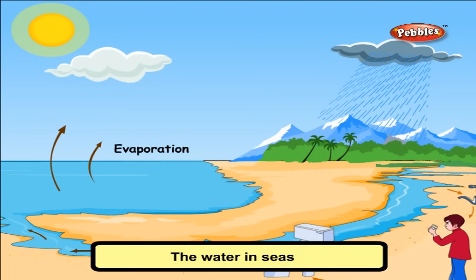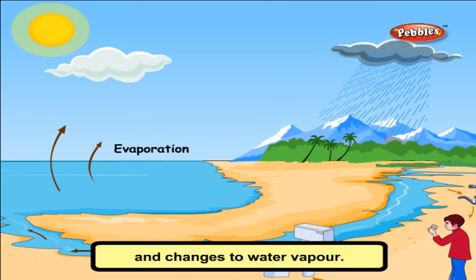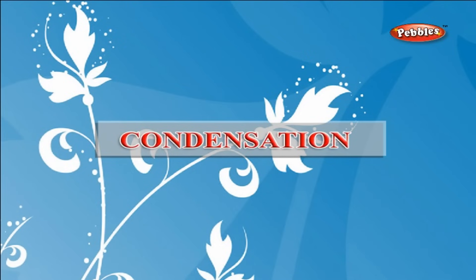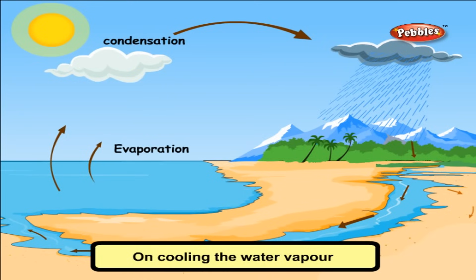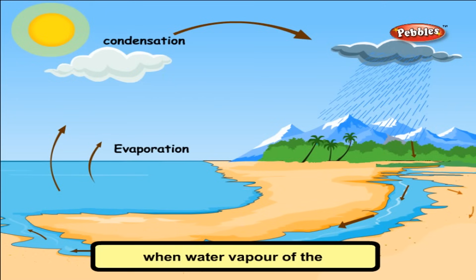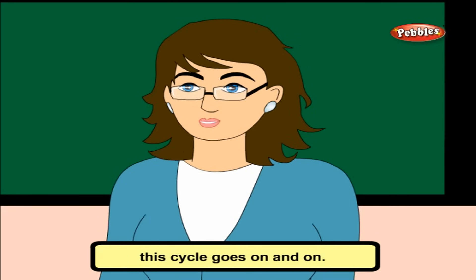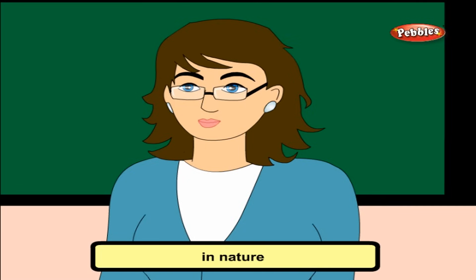Evaporation: The water in seas, lakes, ponds and rivers gets heated by the heat of the sun and changes to water vapour — this is called evaporation. Condensation: On cooling, the water vapour condenses into water drops — this is called condensation. We get rain when water vapour in the clouds condenses into water. This cycle goes on and on, and this process of evaporation and condensation in nature throughout the year is called the water cycle.